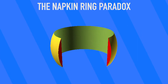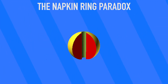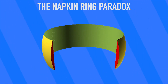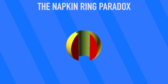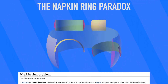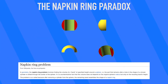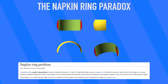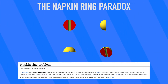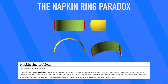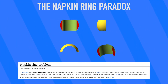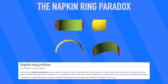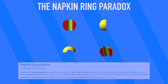No matter the size of the sphere, if you perform the procedure to create a napkin ring of a certain height, every ring that height will have the same volume. But that probably doesn't blow your mind yet, because it's a little abstract. So let's bring this abstractness back to reality to demonstrate it further.